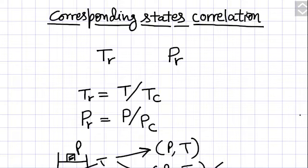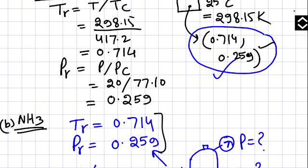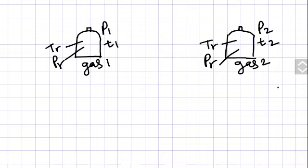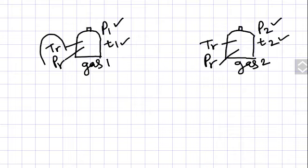Welcome students to this new class. These days we are discussing corresponding states correlation. In the last class we learned that if we take two gases — gas 1 and gas 2 — one at T1 and P1, another at T2 and P2, and these pressure and temperature are selected such that both gases are at the same TR and PR.